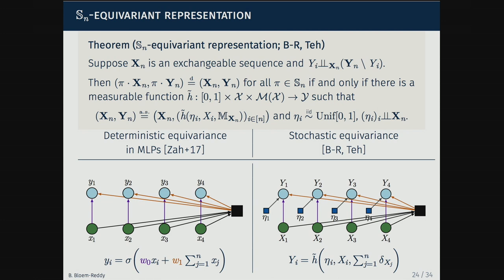The next slide generalizes beyond permutations. Are there any questions on permutation invariance before I go further? The left side is a special case of the right where we ignore the noise and impose the feed-forward structure. The right side is something like a computation graph but with arbitrary functions rather than weights connecting them. If I restrict my class of functions h̃ to have a feed-forward architecture, I get back to the left side.